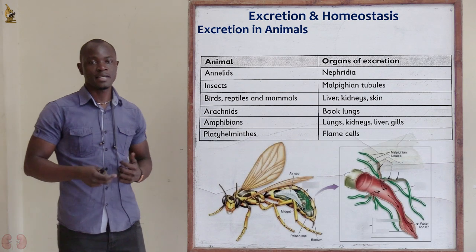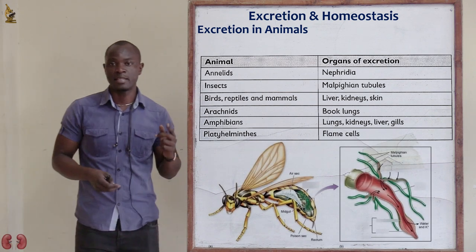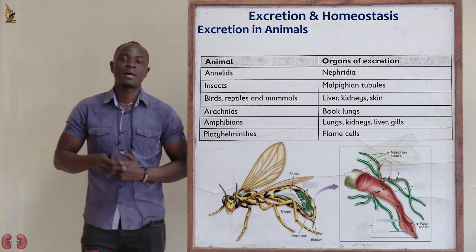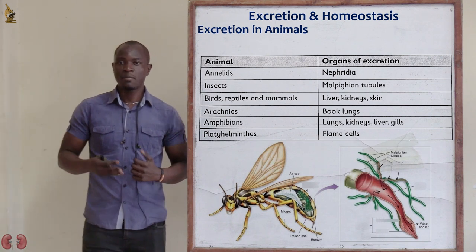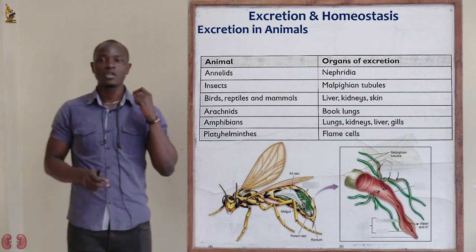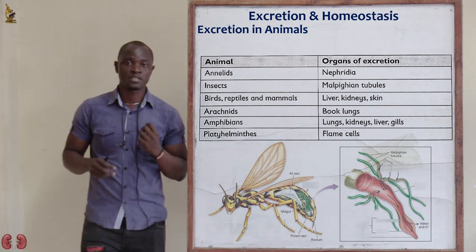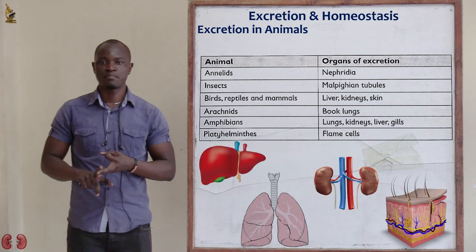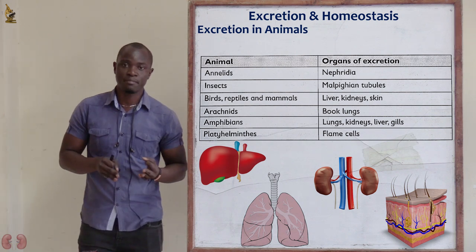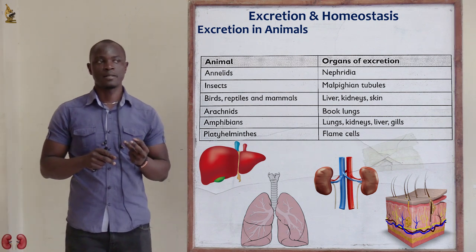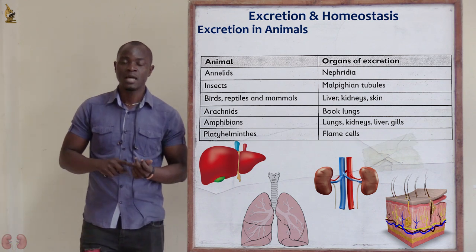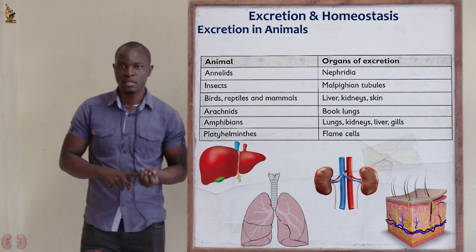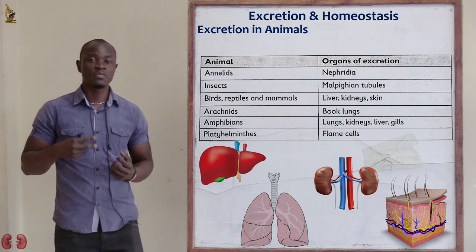Next, we have insects. For insects, the organ of excretion is the Malpighian tubes, which are used to remove waste products. After that, we have birds, reptiles, and mammals — organisms under phylum Chordata, including class Reptilia and class Mammalia. These organisms use the kidneys, lungs, and skin to remove different waste products from their bodies.